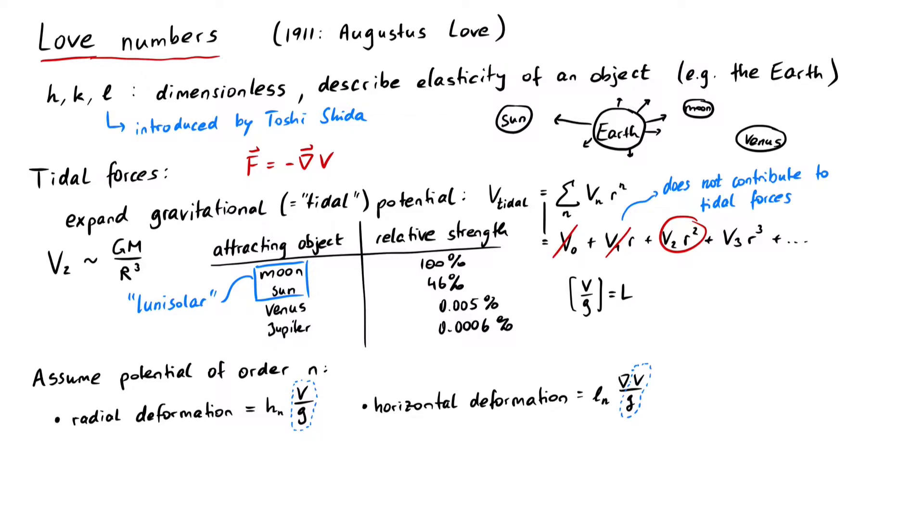Therefore, V over g has a special name, it is called the equilibrium potential or potential height. Finally, all this deformation of the earth's surface gives rise to an additional gravitational potential, described by k_n V.